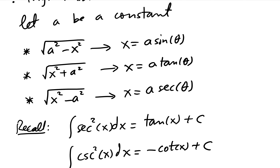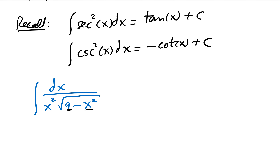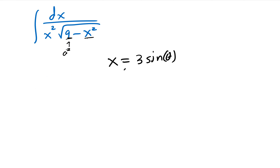This looks like a number minus x², matching the first form where a²= 9, so a = 3. Therefore we use x = a·sin(θ) = 3·sin(θ). From here I find three things every problem: first, differentiate both sides — dx = 3·cos(θ)·dθ.